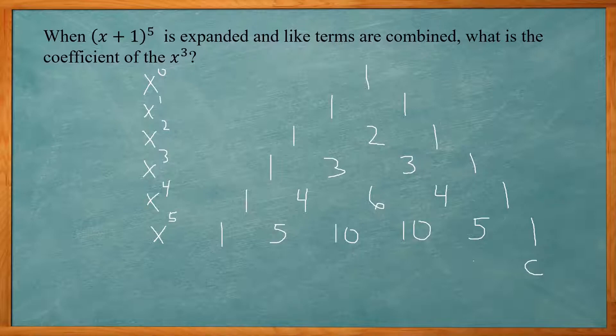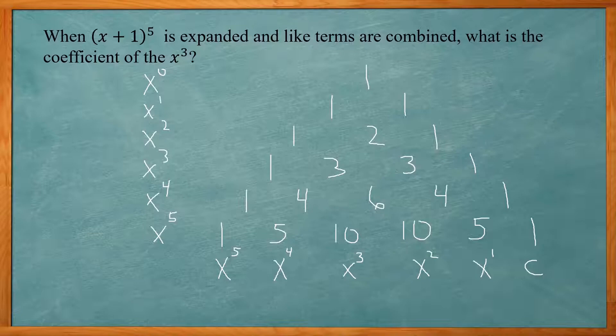The one next to that is your x to the 1st term, and x to the 2nd term, x to the 3rd term, x to the 4th term, and x to the 5th term. So we simply go to the x to the 3rd term. The coefficient of that will be 10.